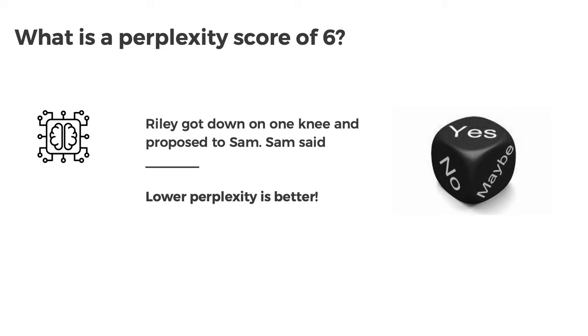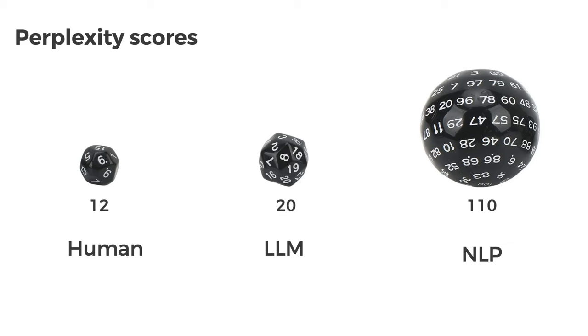For example: 'Riley got down on one knee and proposed to Sam. Sam said...' — a perplexity of six here means rolling a six-sided die to get the right word. Humans score around a perplexity of 12 across an entire corpus of text as an average. LLMs score around 20, plus or minus, and in some cases outperform humans. Compare that to traditional NLP at about 110 — that's a five to six times improvement, which is why all the hype is coming in right now.